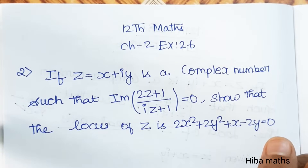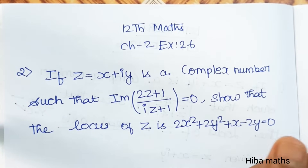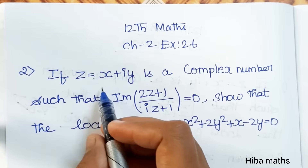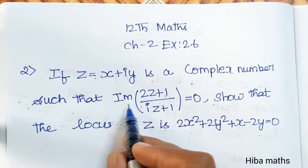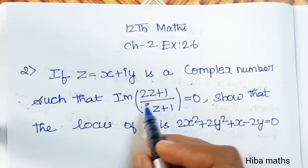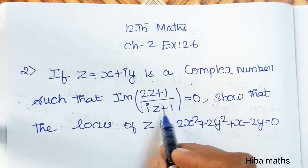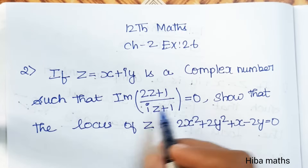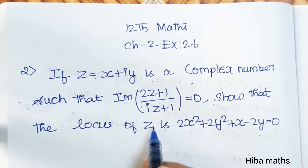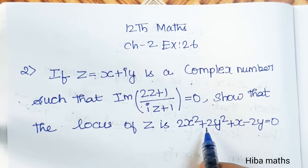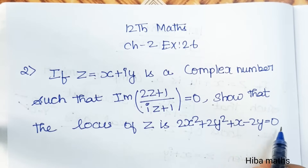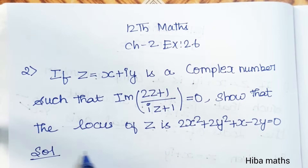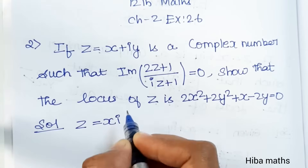Hello students, welcome to Hibamax 12 Standard, Chapter 2, Exercise 2.6, second question. If z is equal to x plus iy is a complex number such that the imaginary part of (2z+1)/(iz+1) is equal to 0, then show that the locus of z is 2x² + 2y² + x − 2y = 0.